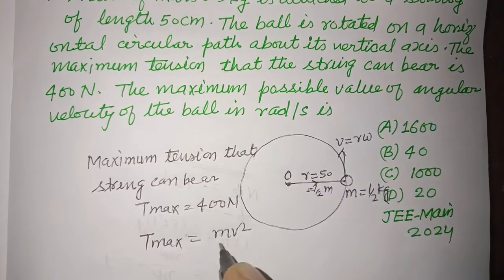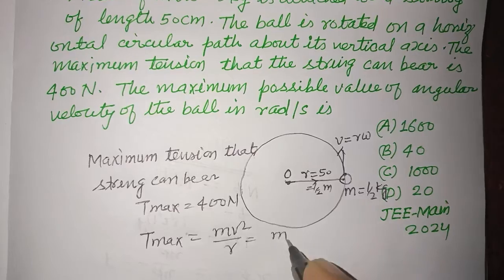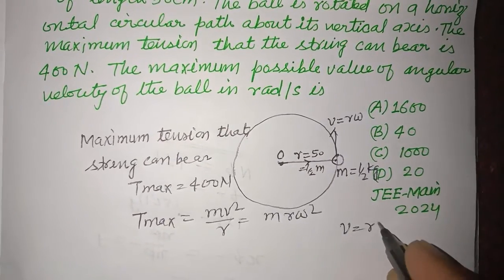So mv square upon R, or mr omega square, because V equal to R omega.